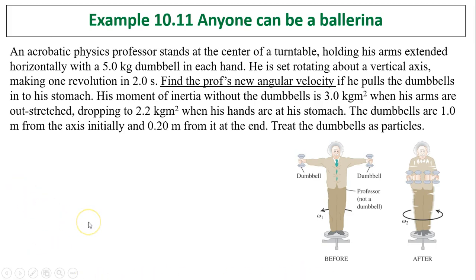There is no net torque other than the force between the dumbbell and the professor. There is no outside torque acting on the professor and the dumbbell system. So total momentum is conserved. Let's take a look at the before situation. The professor's moment of inertia is 3, plus the dumbbell's moment of inertia gives you 13 kilograms meter squared. Omega 1 equals 1 revolution per 2 seconds, so that's 0.5 revolutions per second. When he pulls his arms inside, his moment of inertia is 2.2. That is his moment of inertia plus the dumbbell's inertia. That gives you 2.6 kilograms meter squared. What is his omega 2?